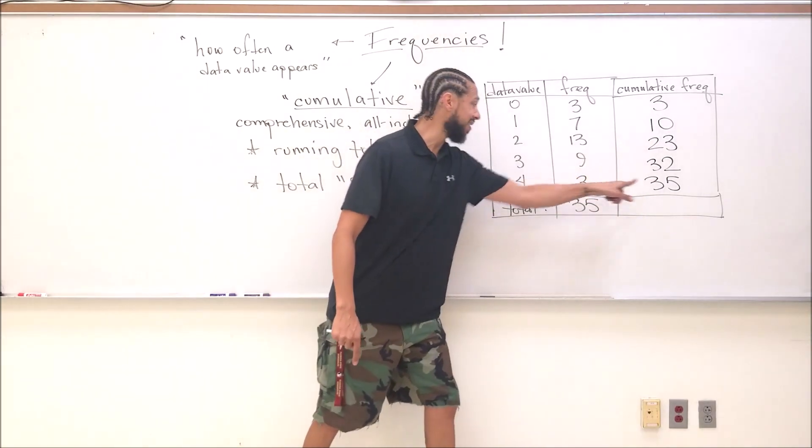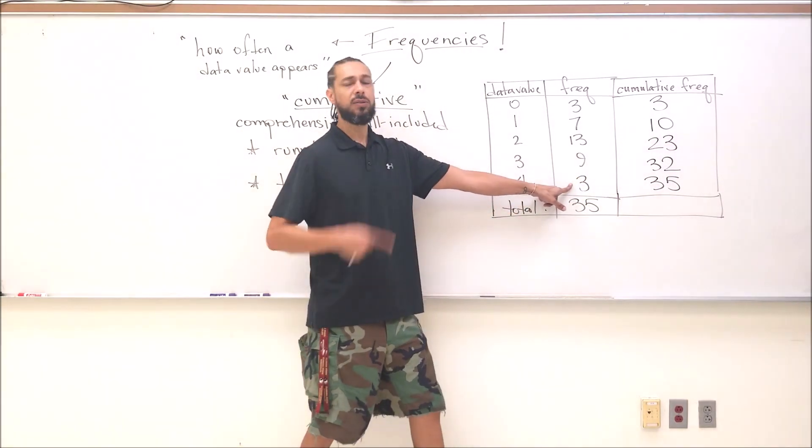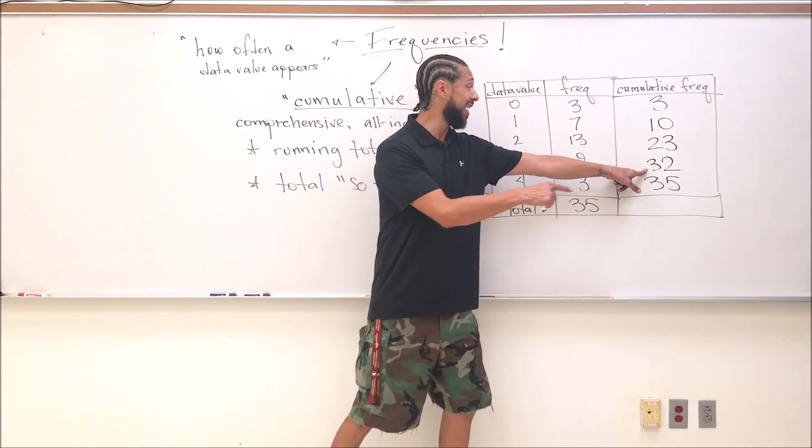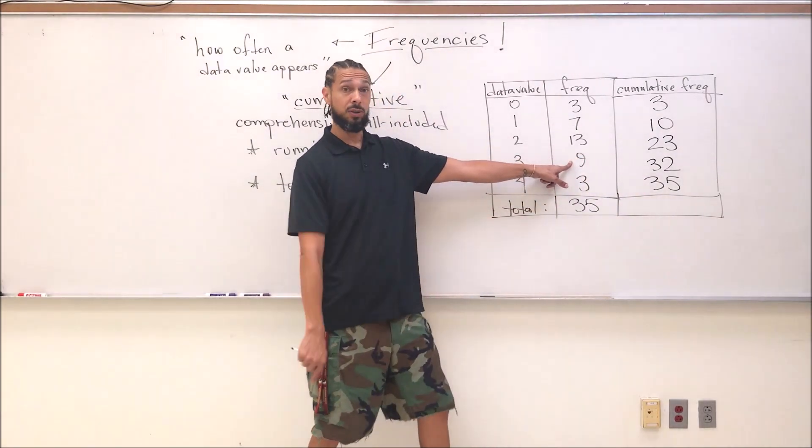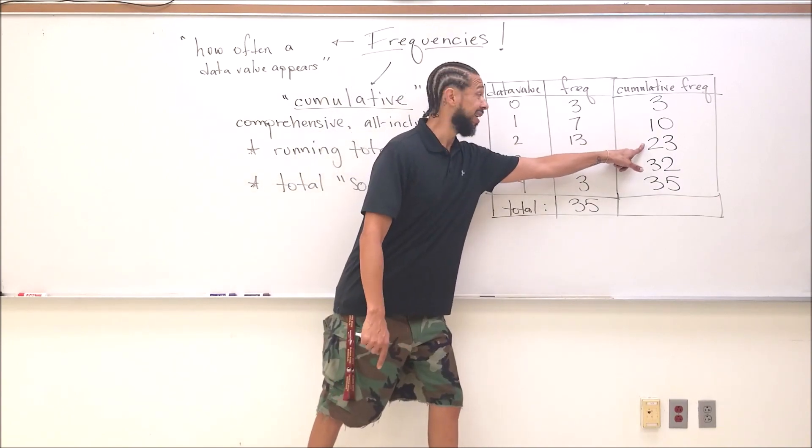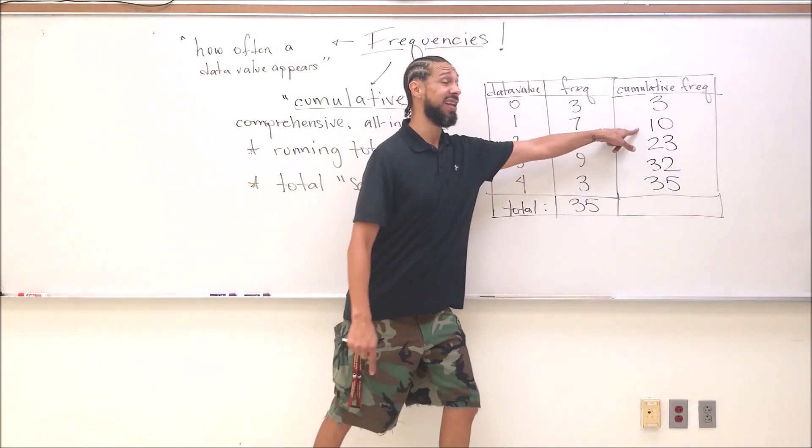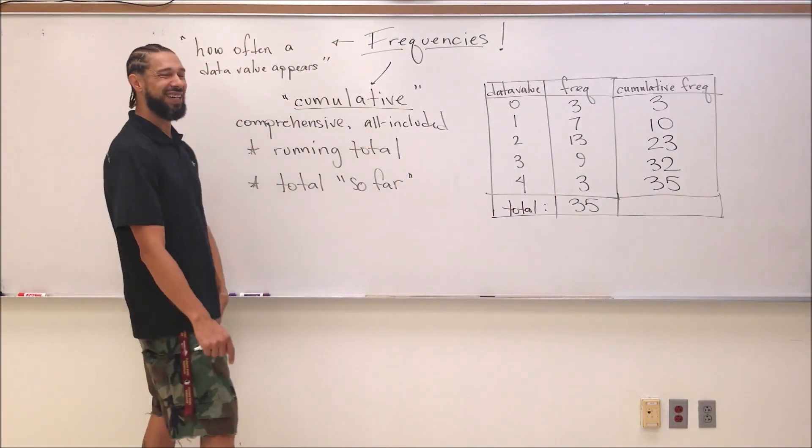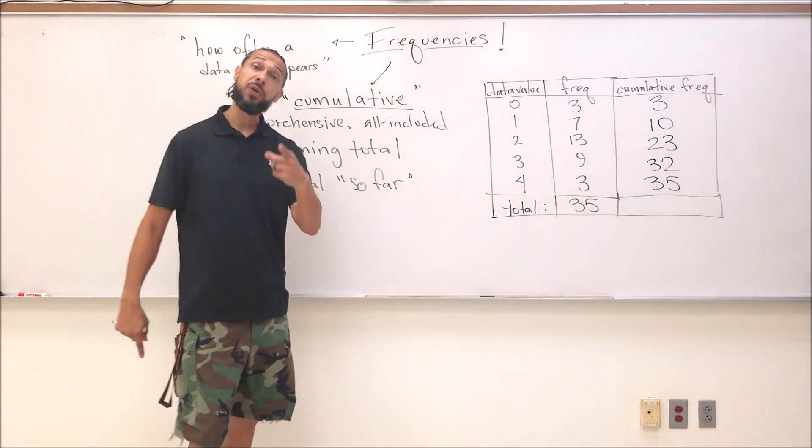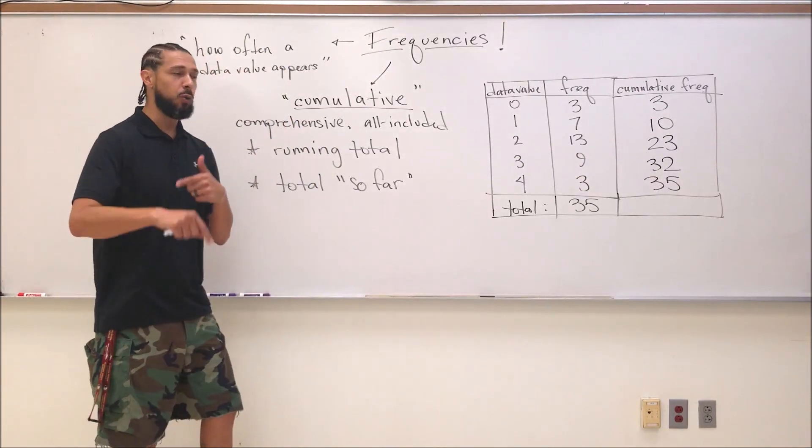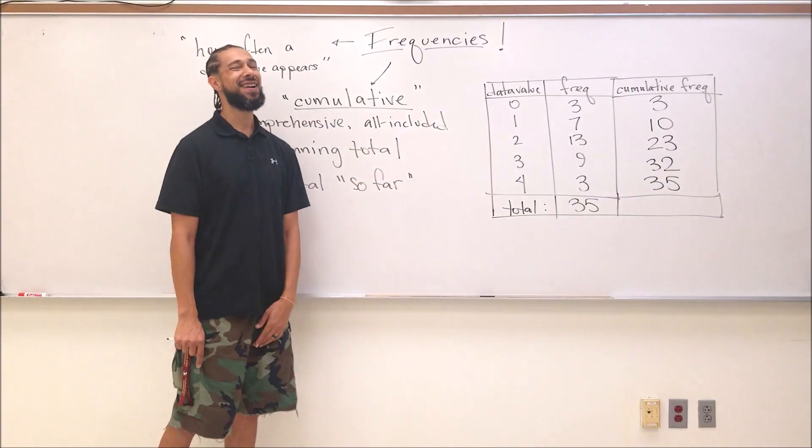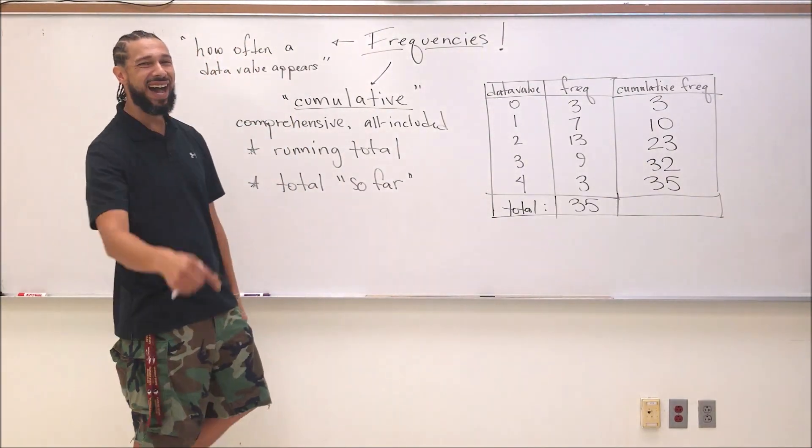This grand total, if I subtract the three fours out of there, how many data values will I have left? 32. If I take these nine threes out, guess how many data values I have left? 23. If I take 13 out of that, I have 10 left. If I take seven out of that, I got three left. That's how you build a cumulative frequency chart. Soon we'll talk about how to put this on a graph and make box and whiskers plots from it. Can't wait. I'll see you then. Bye guys.